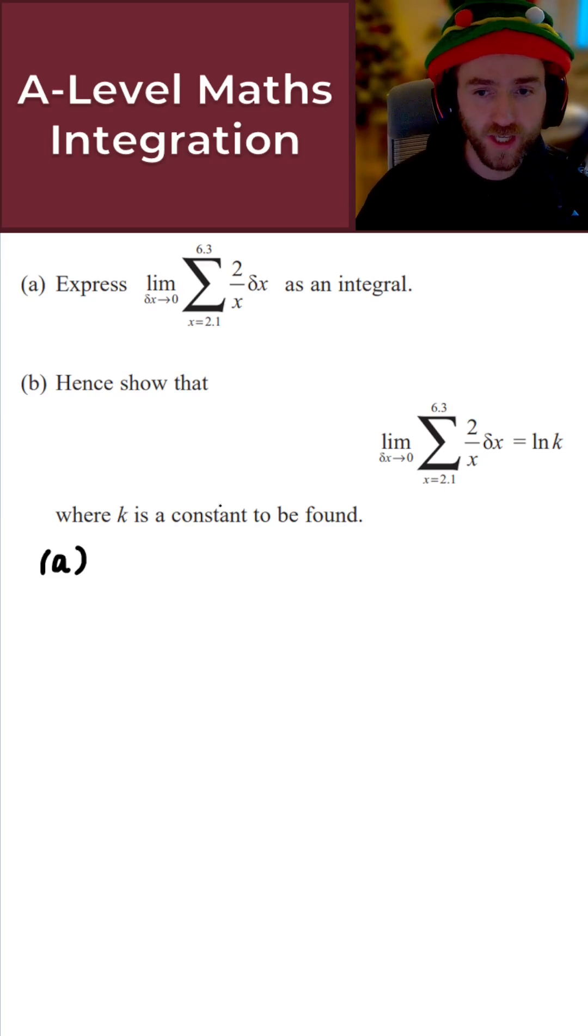Now for the first part of this question, it says express this limit as an integral. If I want to express this limit as an integral, this is just the same as the integral of 2 over x with respect to x from 2.1 to 6.3. As you can see, it's pretty straightforward—simply the integral of 2 over x dx from 2.1 to 6.3. Good stuff, nice and easy.